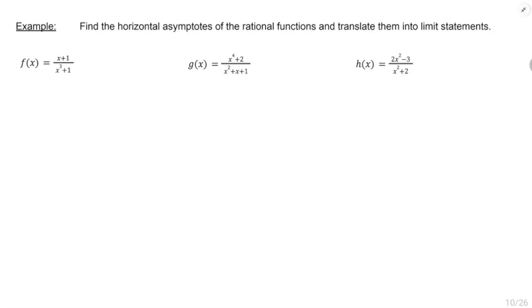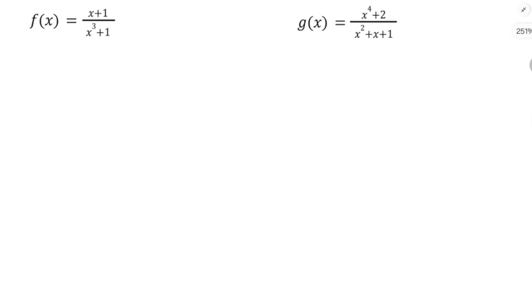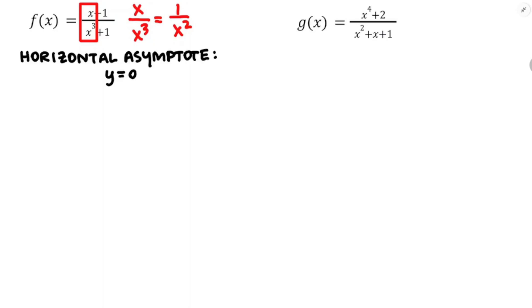Before we move on to vertical asymptotes, do you know how to find the horizontal asymptotes of a rational function and translate those into limit statements? That's something covered in AP Precal. What we did was take the leading terms and divide them. We isolate x divided by x to the 3 — those divide to give 1 over x squared. So the end behavior of f is the same as the end behavior of 1 over x squared, which means there is a horizontal asymptote of y equals 0.